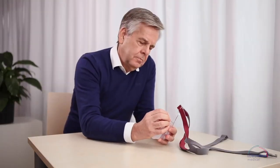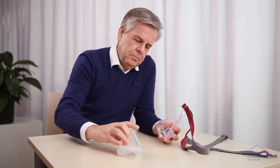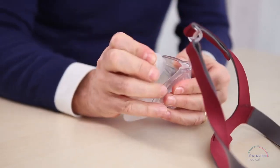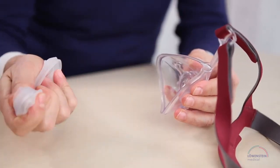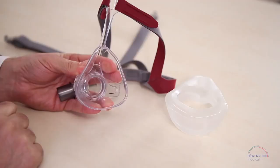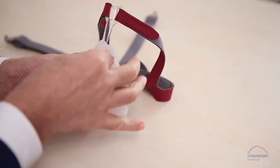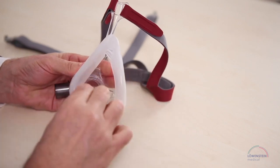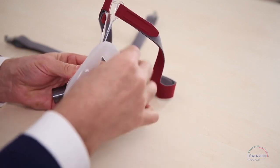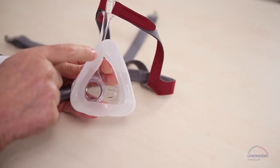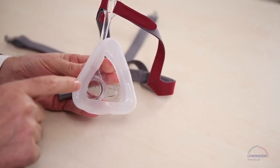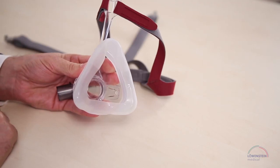You can remove the mask cushion very easily by pulling on it gently. It is made entirely of soft silicone. To fasten it in place again, start at the top and push it all around onto the mask body. The cushion has two different surfaces. The upper portion is soft and supple while the lower is firmer to keep the cushion in place.